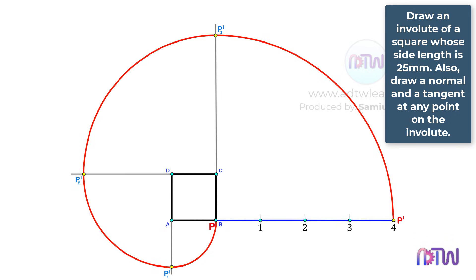This is the required involute. The length between points A and P1 is equal to the length between points 3 and 4. The length between points D and P2 is equal to the length between points 2 and 4. The length between points C and P1 is equal to the length between points 1 and 4. To get this involute, we can mark these lengths on these lines and draw a smooth curve.